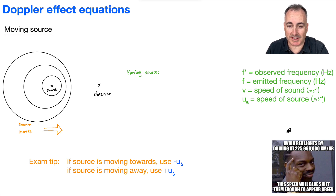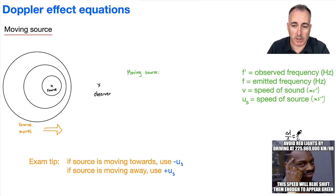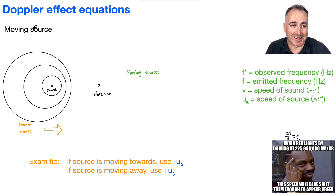This actually should work if you do this equation: delta lambda over lambda is approximately equal to V over C. But okay, let's actually go over this one here.